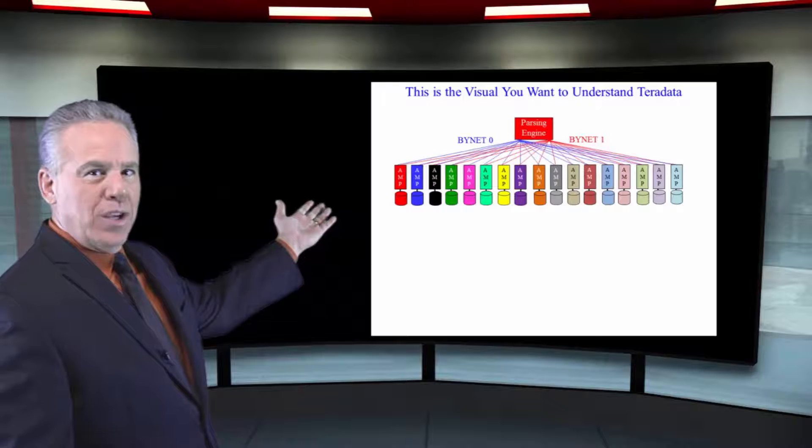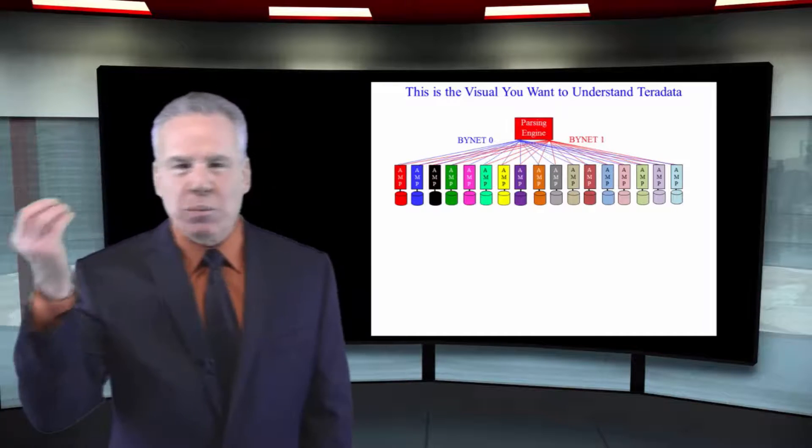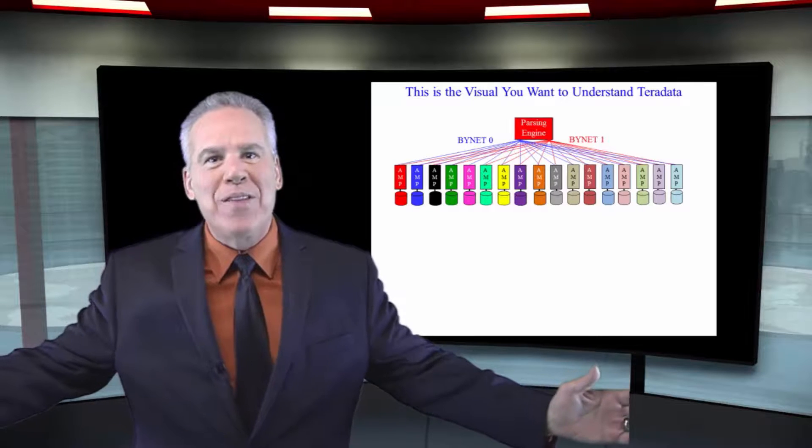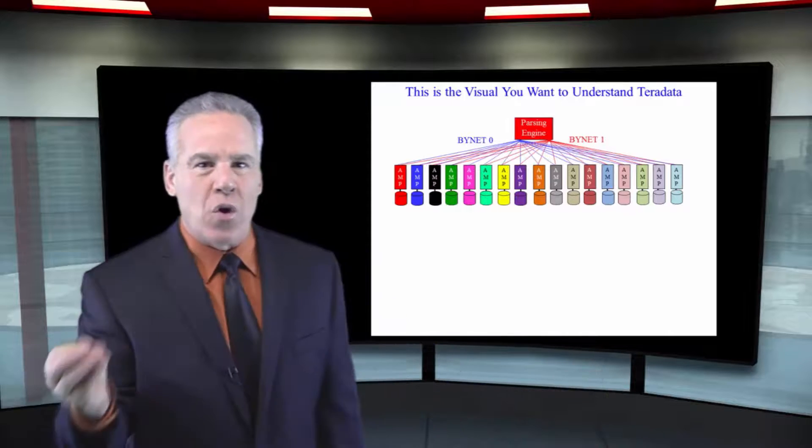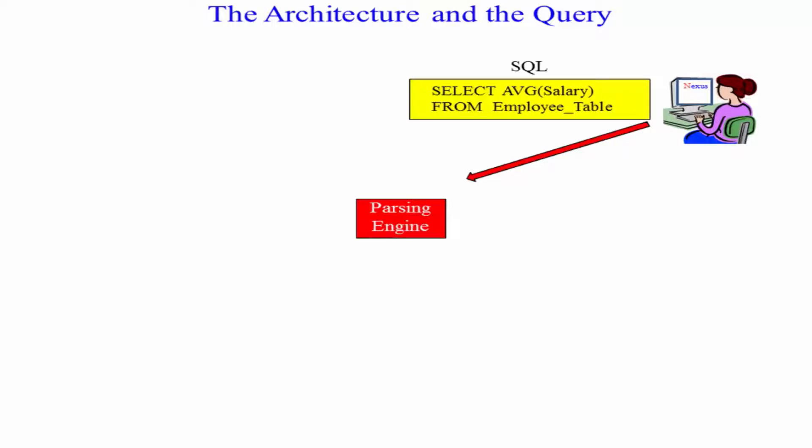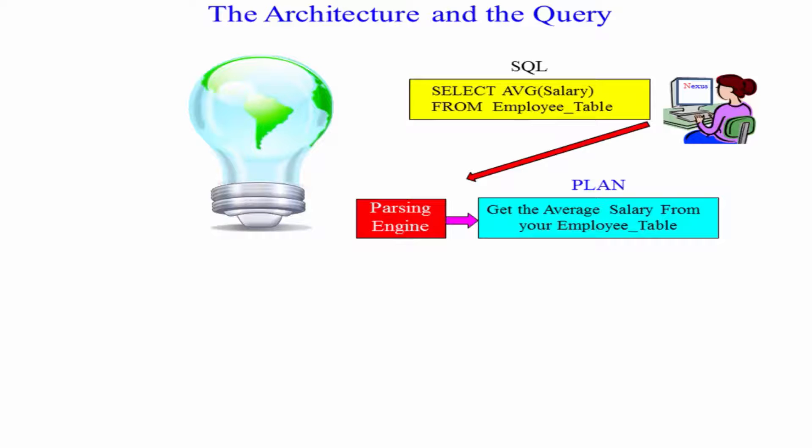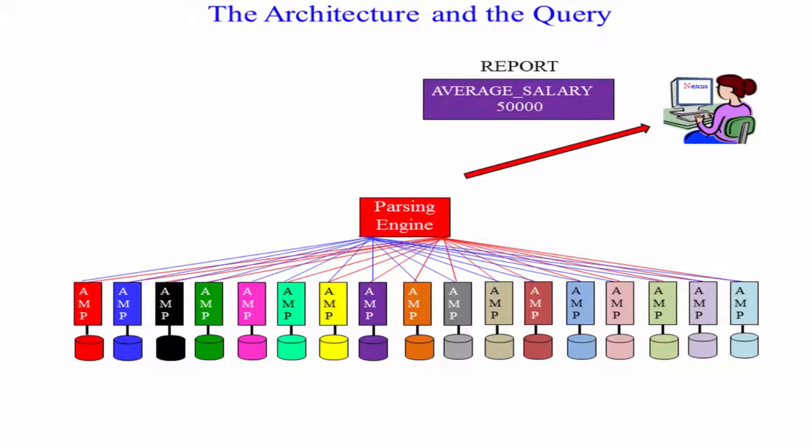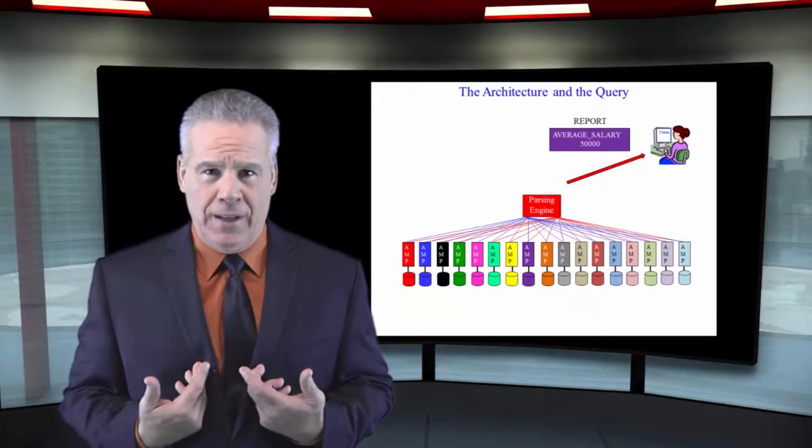This is a fantastic picture to see though, because each parsing engine that speaks is like the only one because the amps are going to do whatever that parsing engine says. So understand your architecture. SQL comes in from the user to the parsing engine. That parsing engine comes up with the plan for the amps to follow, passes it along Binet Zero or Binet One. Those amps get it, get it from their discs, bring it back over that Binet, give it to the parsing engine and the parsing engine takes all the credit. You know, I did this personally for you.